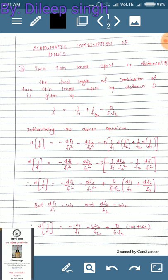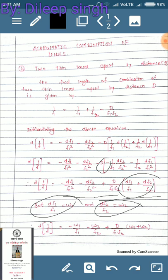After simplification: −df₁/f₁² − df₂/f₂², plus a positive term because the two minus signs combine to give plus. Now, df₁/f₁ is the dispersive power ω₁ for the first lens, and similarly df₂/f₂ is the dispersive power ω₂ for the second lens. Substituting these values gives us the required equation.